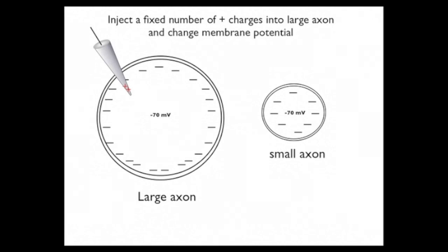They both have a membrane potential, a resting potential, of minus 70 millivolts. Now I'm going to inject a fixed number of charges into the large axon and change the membrane potential. I'm going to inject one, two, three, four, five, six charges.